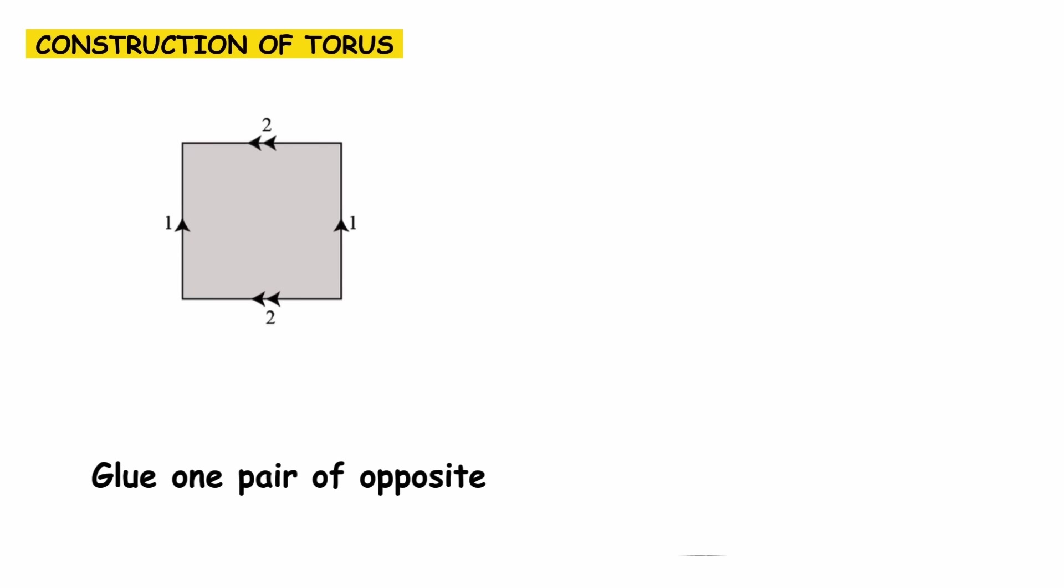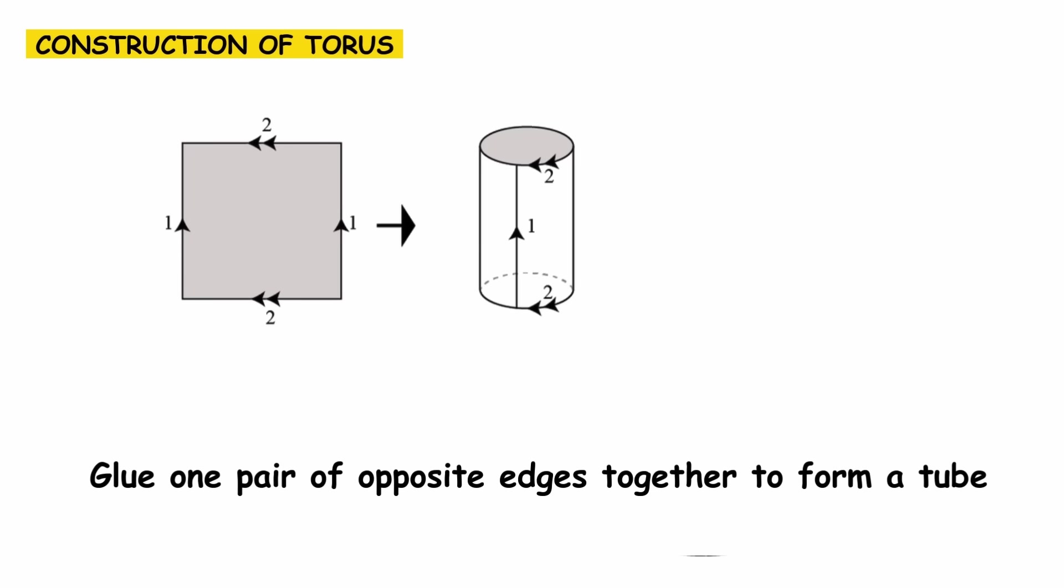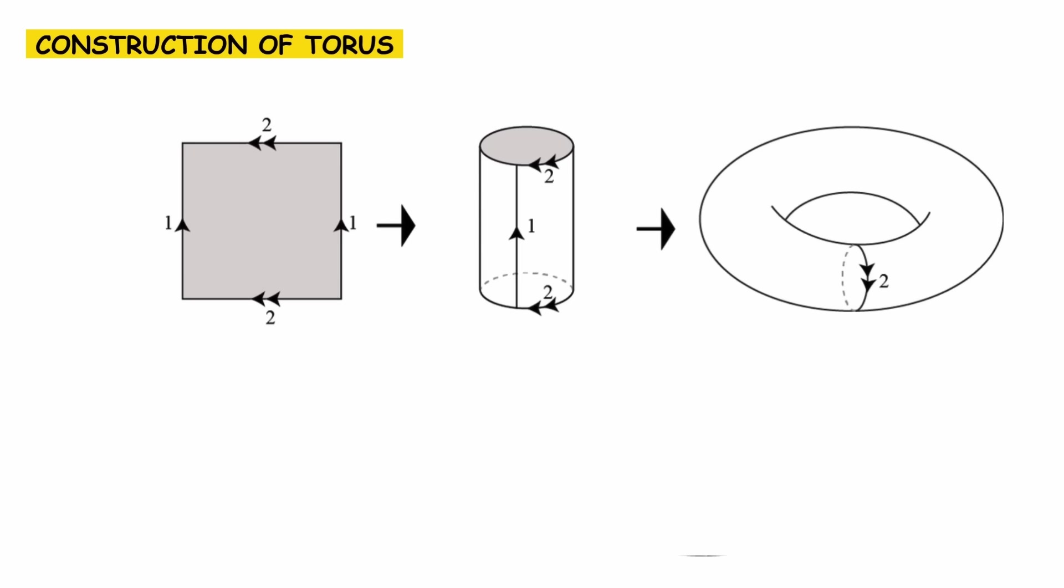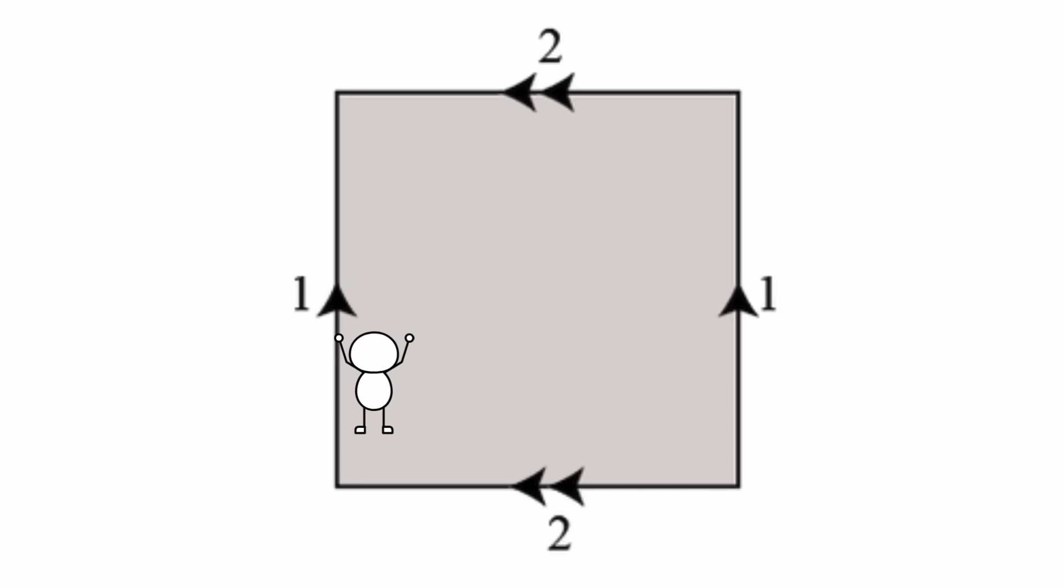One way to construct a torus is to start with a rectangle. Glue one pair of opposite edges together to form a tube, and then glue the ends of the tube together. Of course, the rectangle should be made of an elastic material for this to work properly. You could simply imagine the creature moving around on this rectangle, looping around when it reaches an edge.